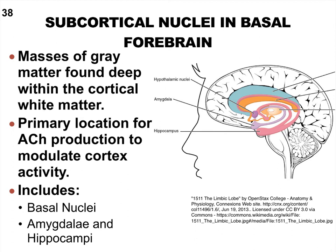We still need to look at what we refer to as some of the nuclei in the cerebrum. When we use the term nucleus in the central nervous system, we're always referring to a clump of cell bodies — gray matter made up of cell bodies, possibly with some unmyelinated fibers. Anytime we talk about a nucleus, there's a lot of integration occurring, lots of synapses, lots of neurotransmitters being passed on — lots of decisions being made.